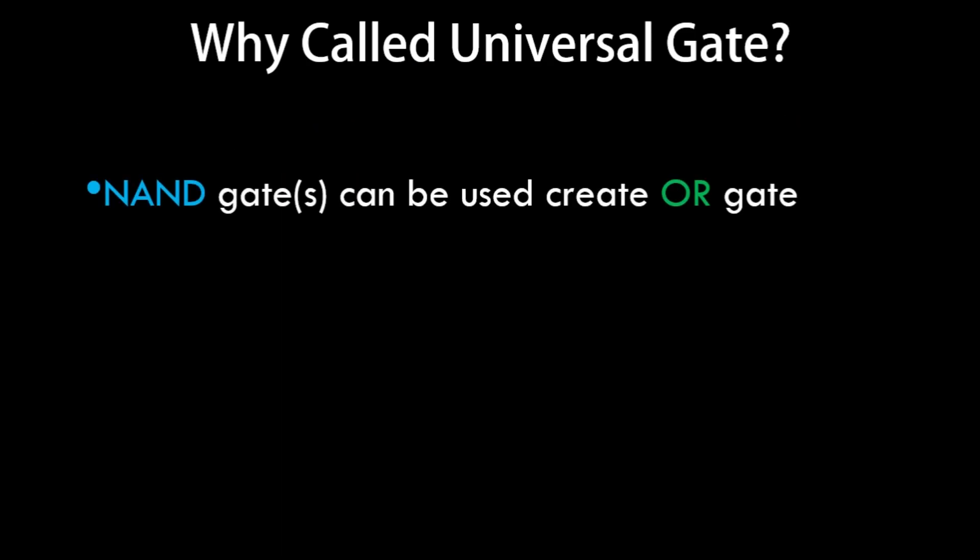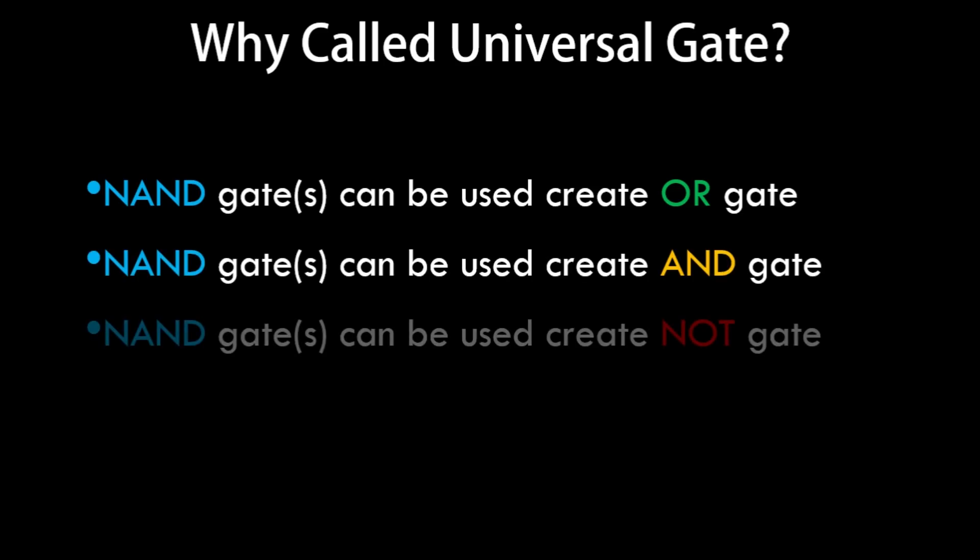So why is the NAND gate called a universal gate? A NAND gate can be used to create the OR gate — we can assemble a number of NAND gates in such a way that we get the output of an OR gate. A NAND gate can also be used to create the output of a NOT gate. Since a single NAND gate or number of NAND gates can be used to create these basic gates, it is known as a universal gate.